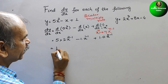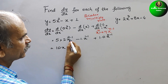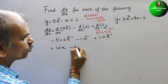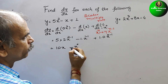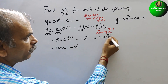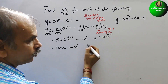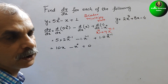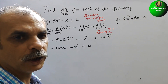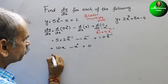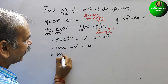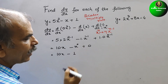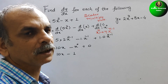So if you solve this you will get 10x minus x to the power of 0, and this will be 0. Zero into any number gives you 0 only. So therefore your answer is 10x - 1, since any number whose power is 0 is 1.